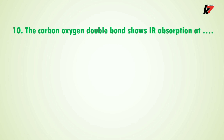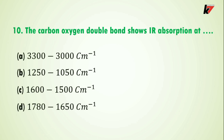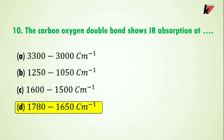Question 10: the carbon-oxygen double bond shows IR absorption at — here are four options and the correct answer is option D. When a compound has a carbon-oxygen double bond, it will absorb in the range of 1780–1615 cm⁻¹.